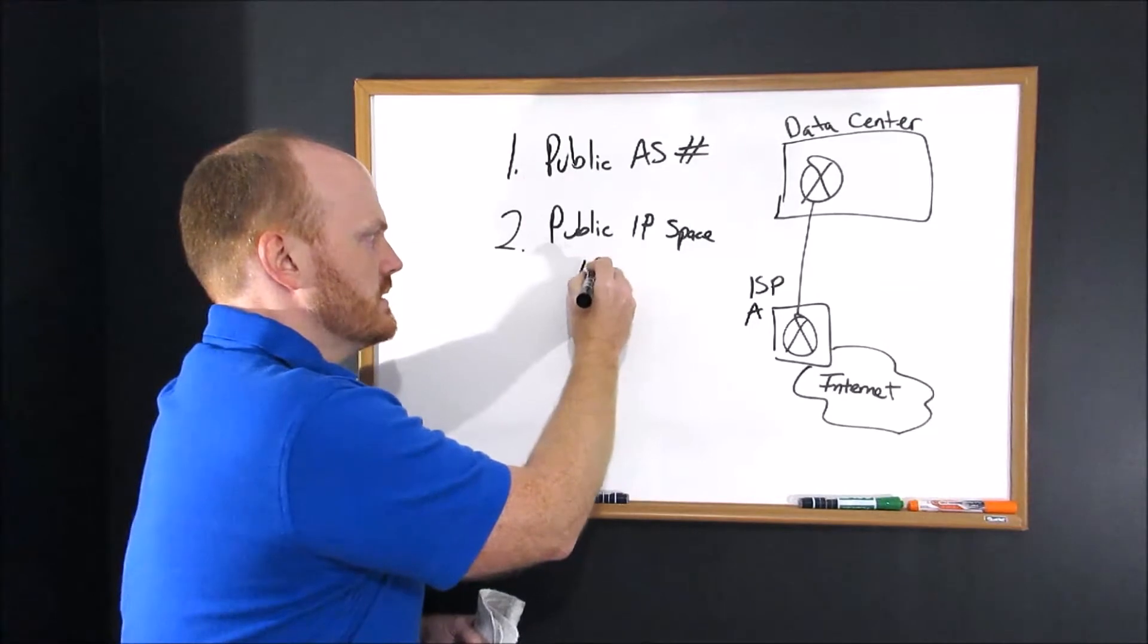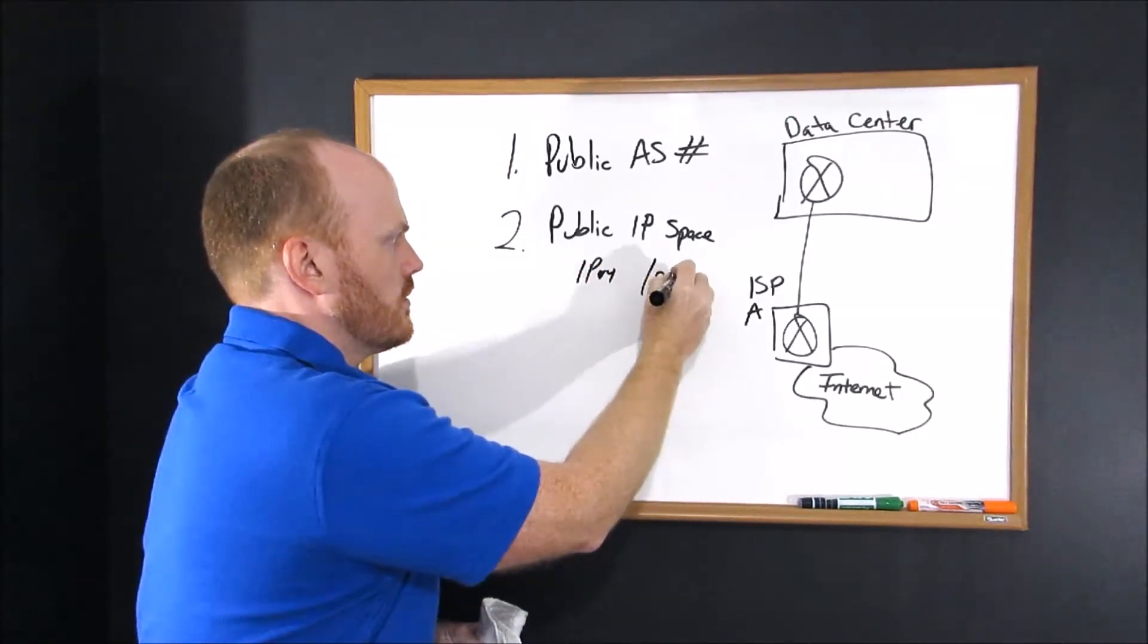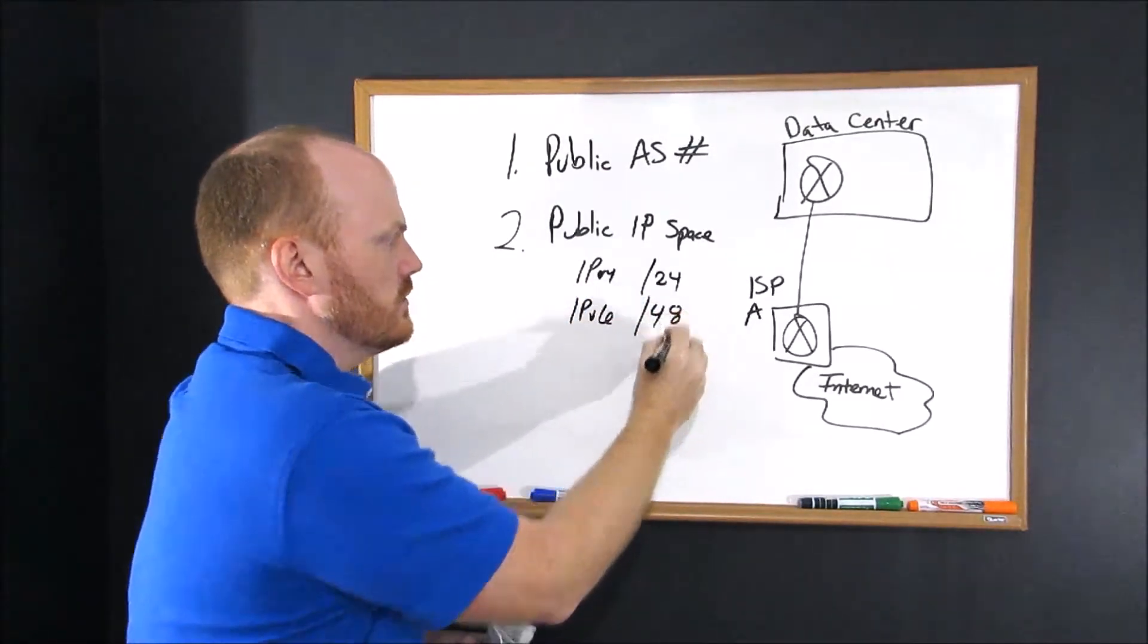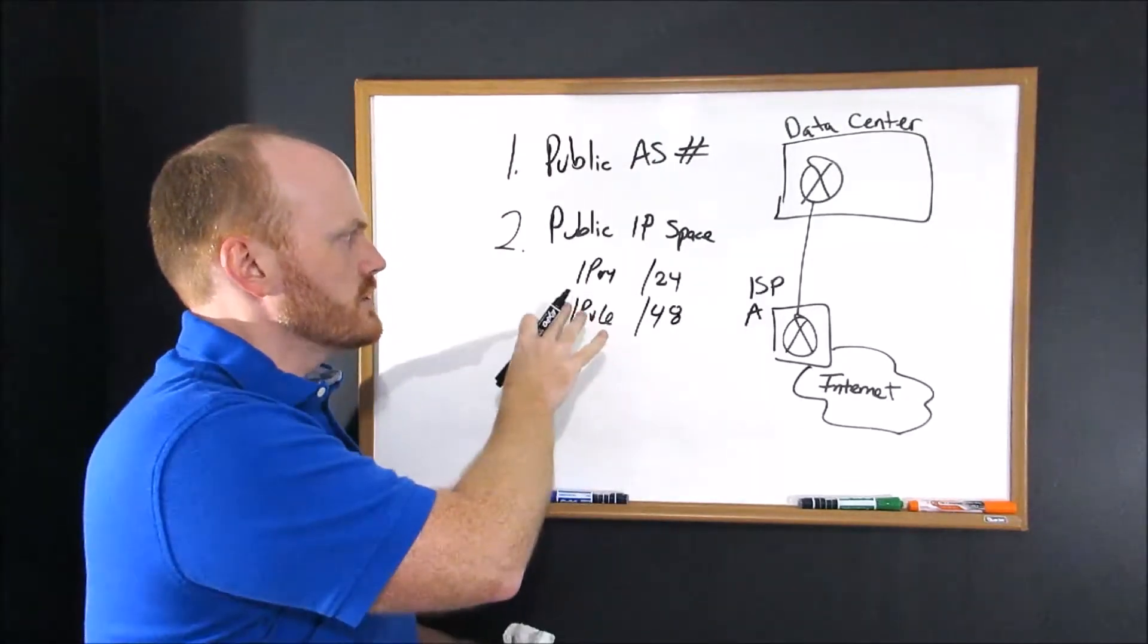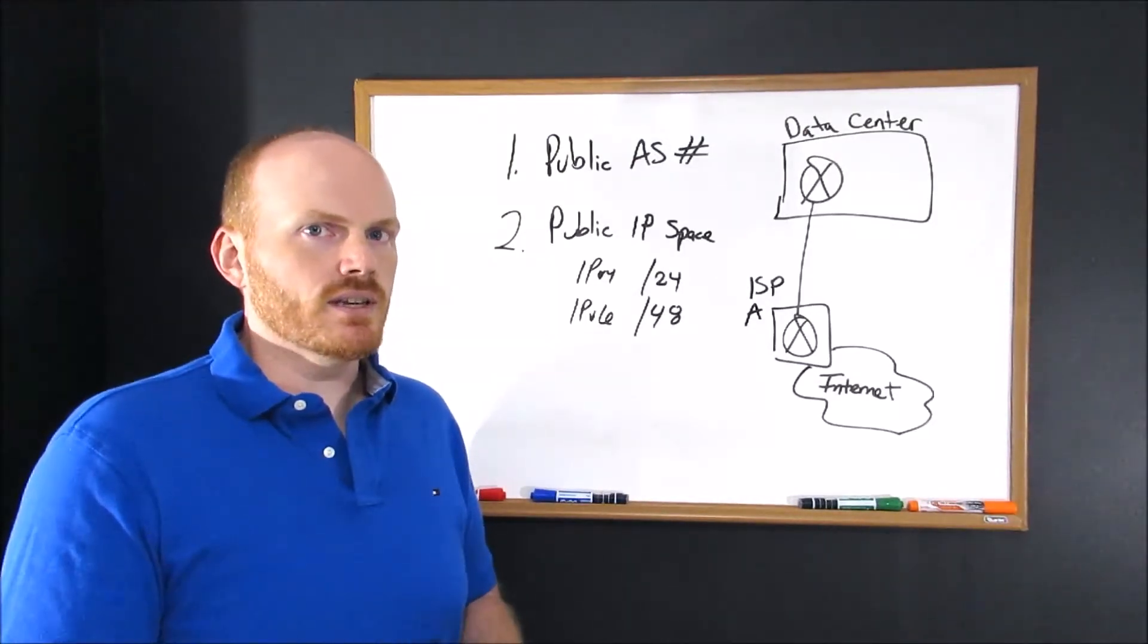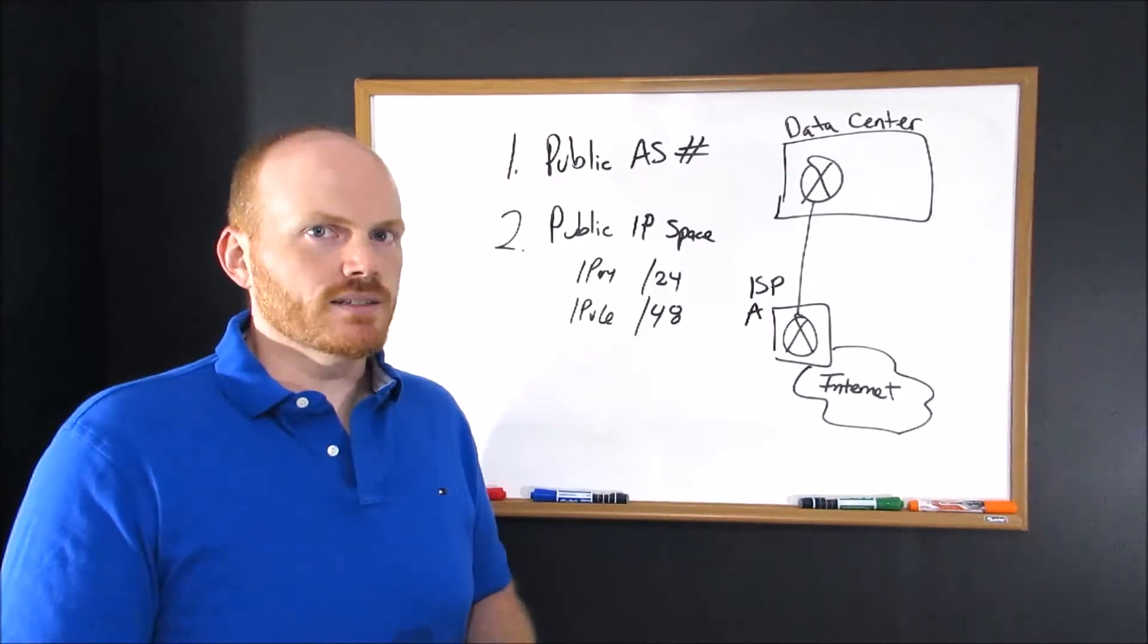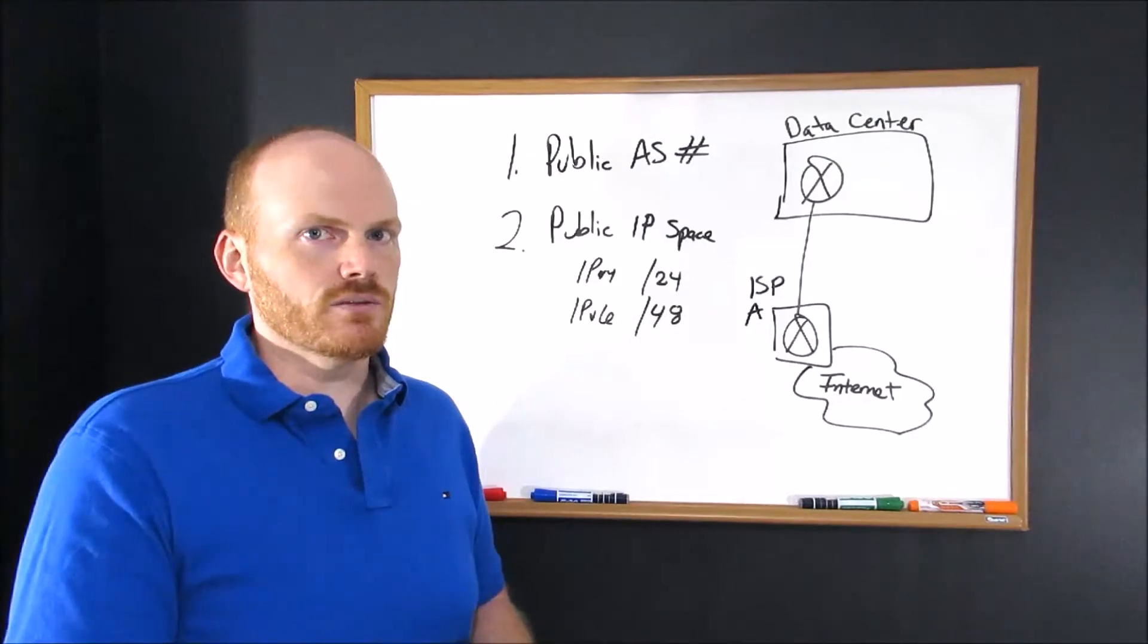Regardless of how you get the IPs, you're going to want to keep in mind these two numbers. With IP version 4, you're going to want a slash 24 or larger block. With IP version 6, you're going to want a slash 48 or larger block. These are the minimum block sizes that you're going to need to be able to advertise the same subnets to both ISPs without any issues.